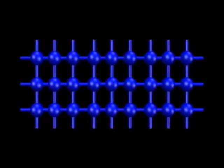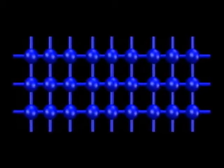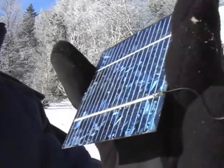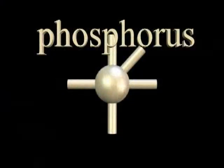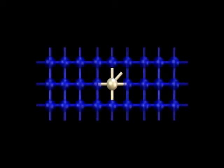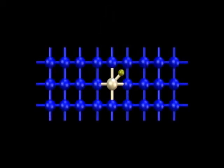It turns out that elements like phosphorus and boron can be added to silicon, creating crystals that form the negative and positive layers of a photovoltaic cell. The negative, or N layer of the cell, is created when a phosphorus atom, which has five valence electrons, replaces a silicon atom. The fifth electron of the phosphorus atom is weakly bound to the atom. If this electron picks up some energy, it can move and become electricity. That energy can come from light.